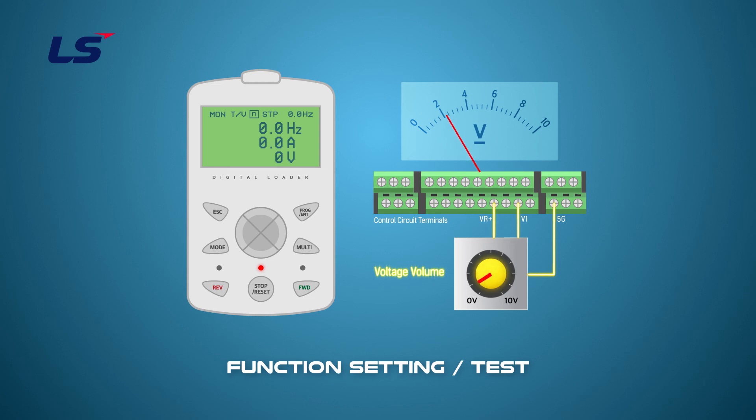Below 2 volts, the frequency command will be 0 hertz. At 8 volts and above, the frequency command is 60 hertz.